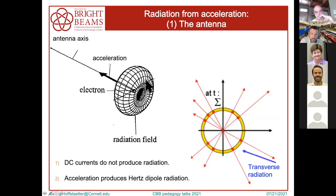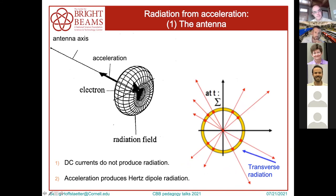Radiation is well known from antennas. If you have electrons moving up and down in an antenna, they produce Hertz dipole radiation — you may remember this characteristic donut pattern. If the antenna is here and electrons get accelerated up and down, you get in the transverse plane this donut-type radiation pattern. Interesting is that a DC current does not produce radiation; from Maxwell's equations, a current makes DC magnetic fields, no radiation.